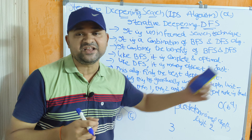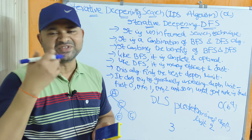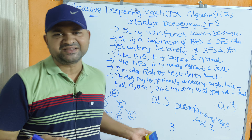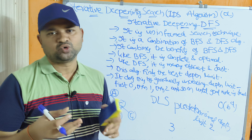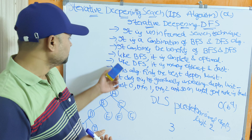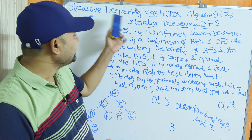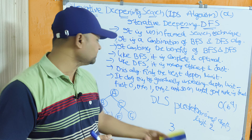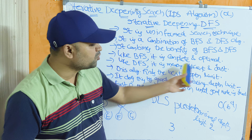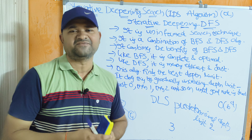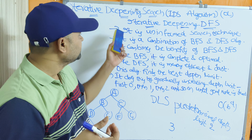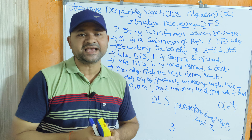DFS is also very fast — if the solution is found in the first path, we get the solution directly and require less time. So, like BFS, IDS is complete and optimal; and like DFS, IDS is memory efficient and fast. These four properties are the key advantages of the IDS algorithm.